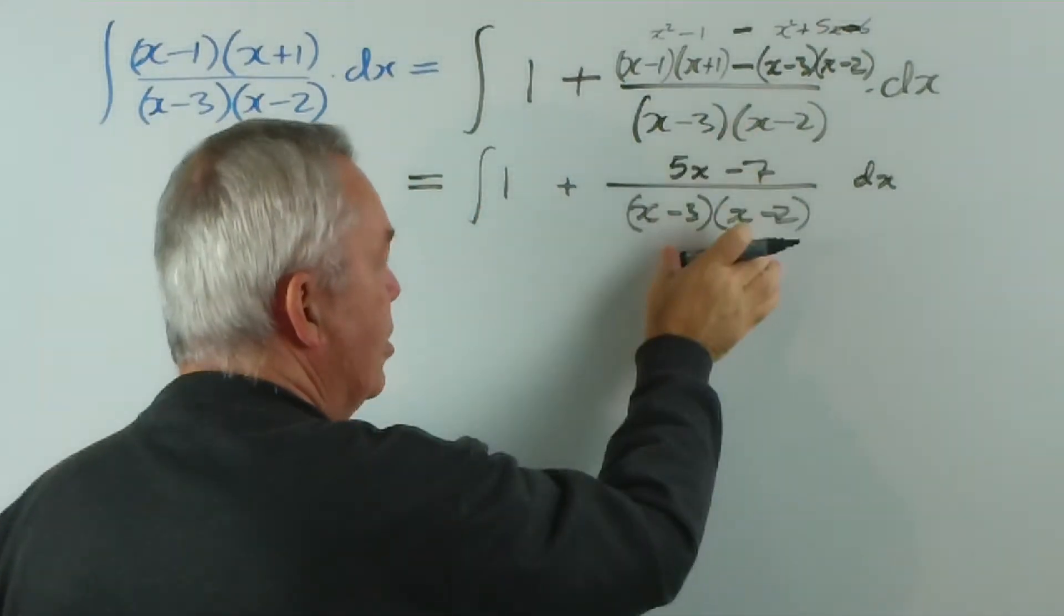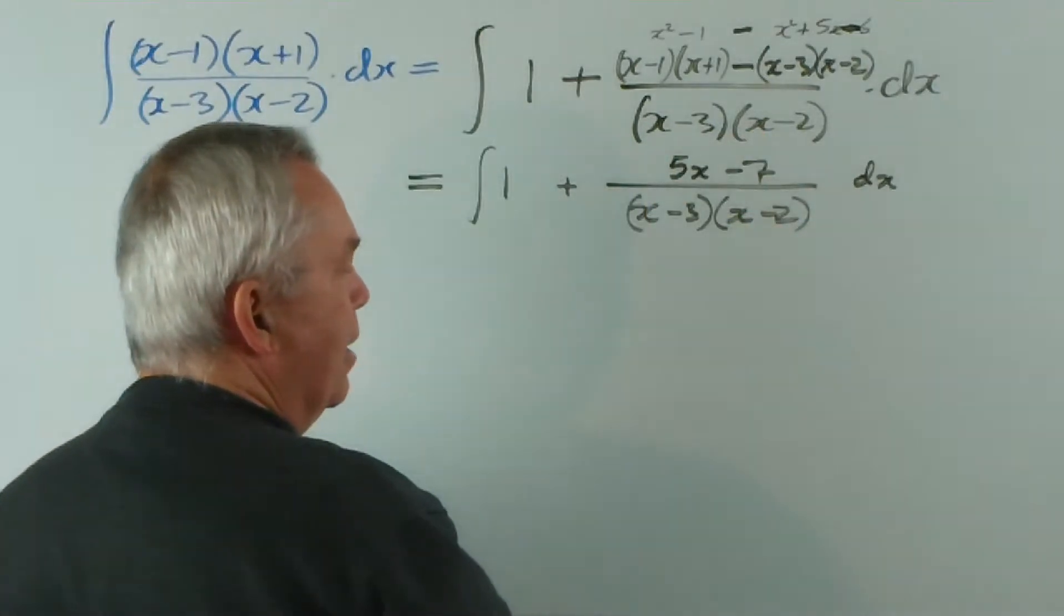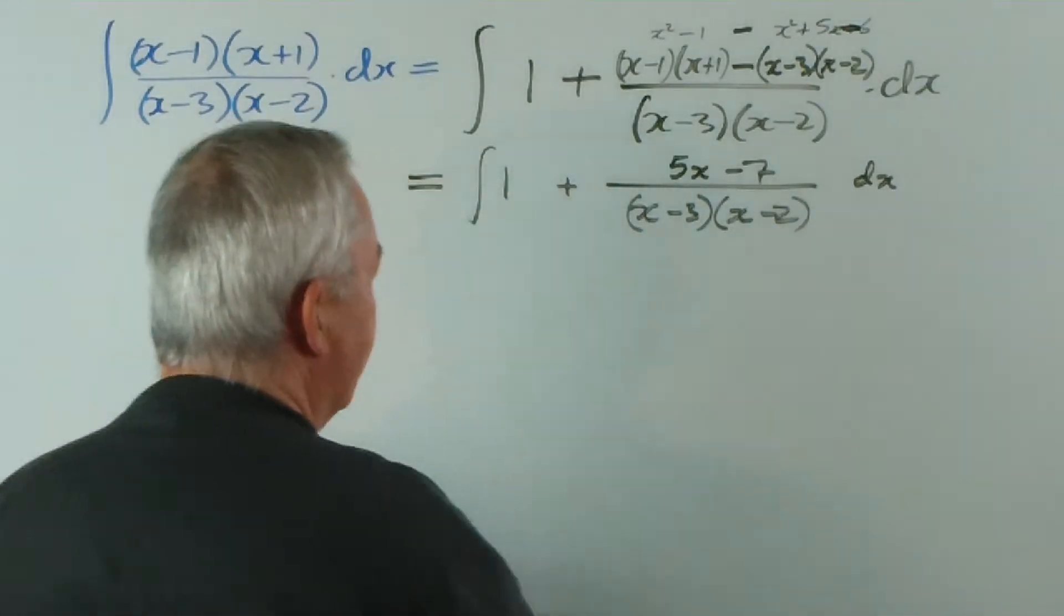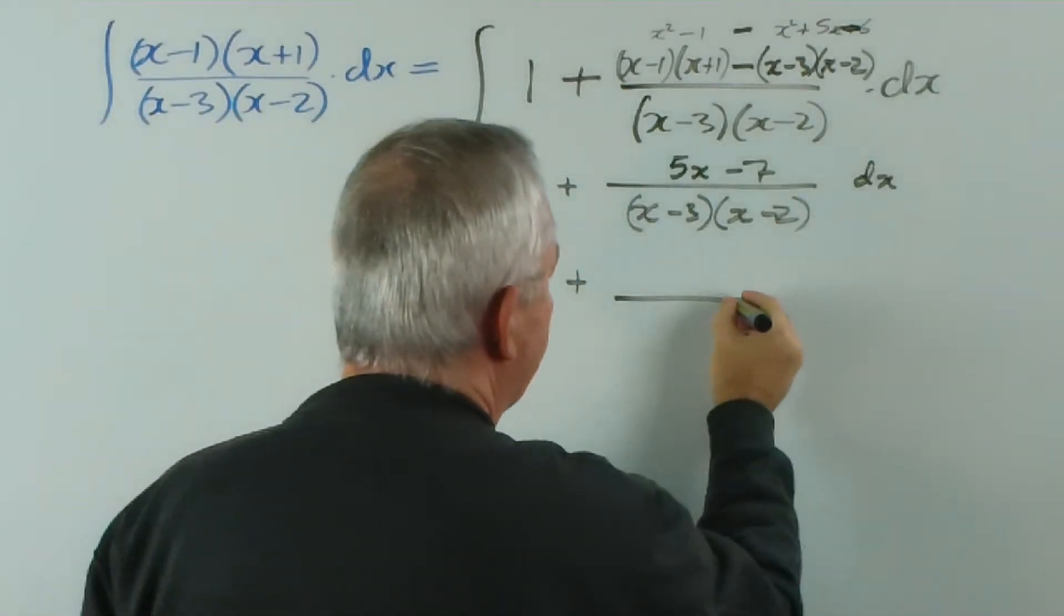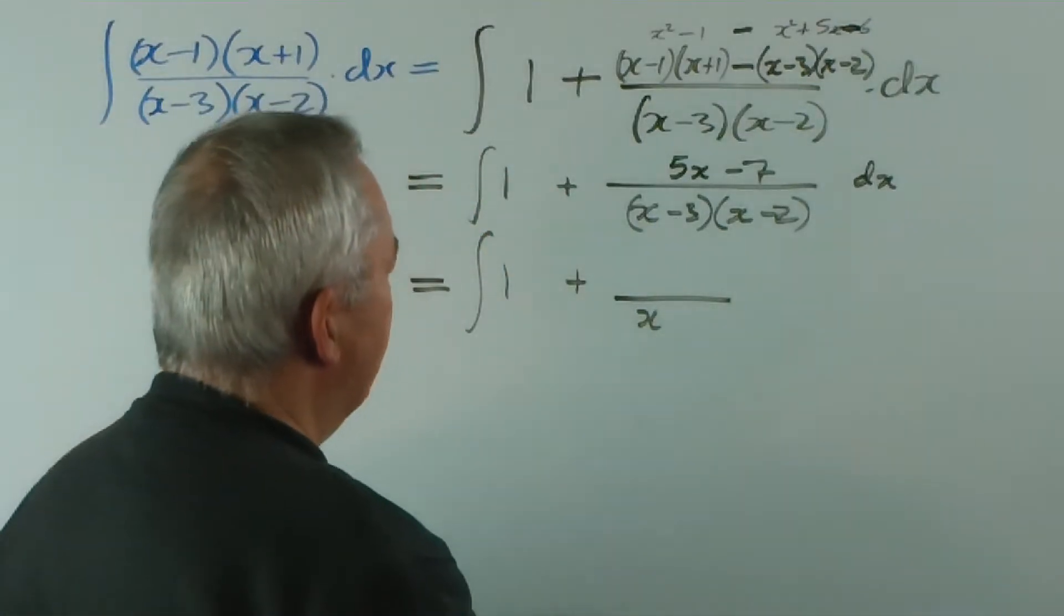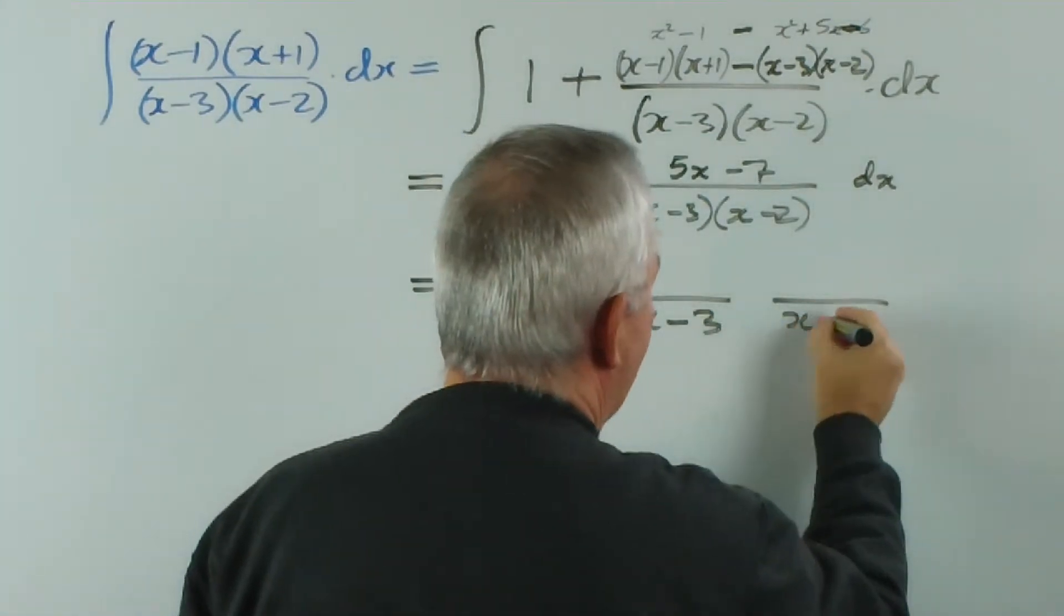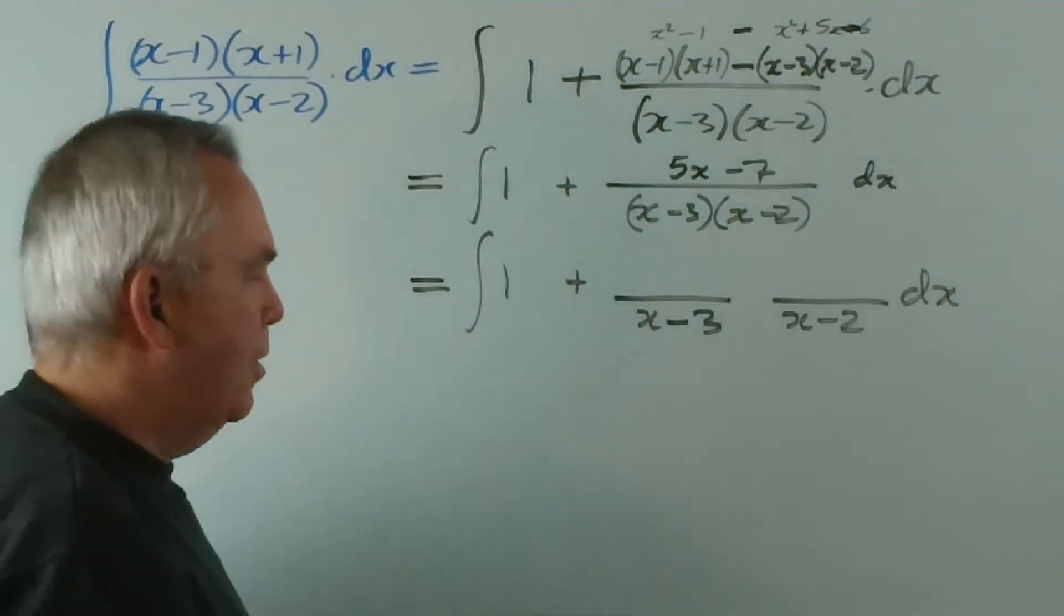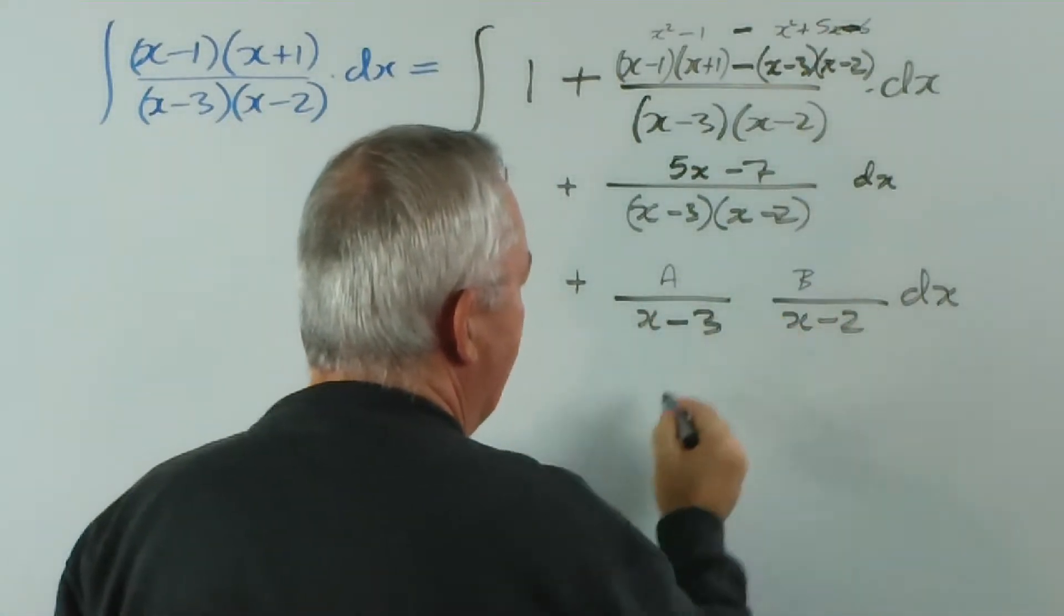Now we have polynomials, but this time this is order one less than this. So we know we're heading into the territory of logarithms. But we're going to have to do this with partial fractions. Now can I do this smartly? Perhaps not. I'm trying to avoid doing a whole lot of work on the side. Let's just imagine we have a and b here.